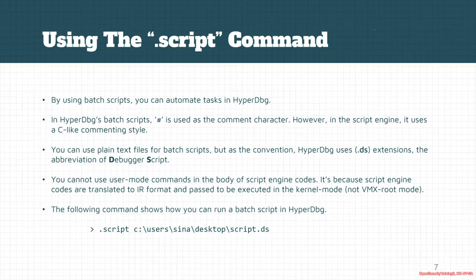The extension for HyperDVG batch scripts is .ds, which stands for debugger script. You can use batch commands to also use the S script engine codes in the batch files.